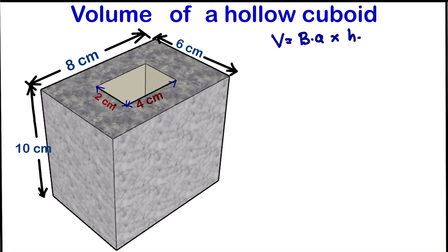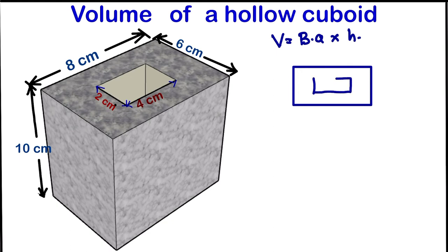So if we look at the base, we have two rectangles. Let us draw the base and write the dimensions. If we look here, we have eight centimeters, and this gives us six centimeters. And inside, which is the empty space, we are going to have four centimeters and two centimeters.